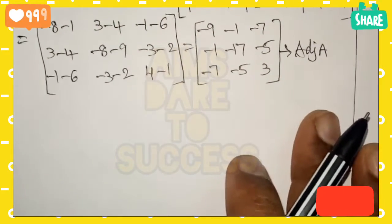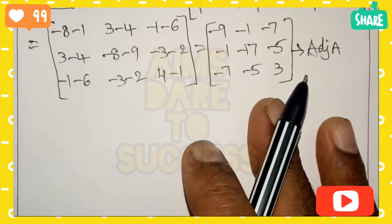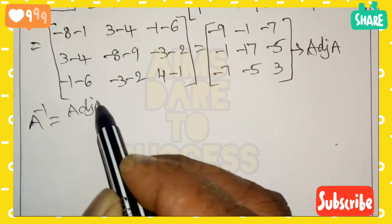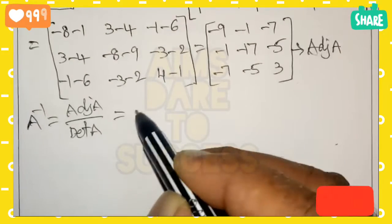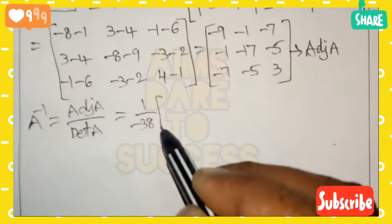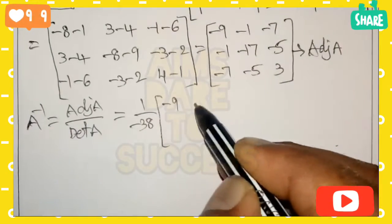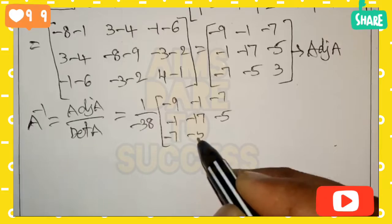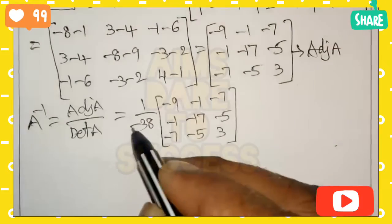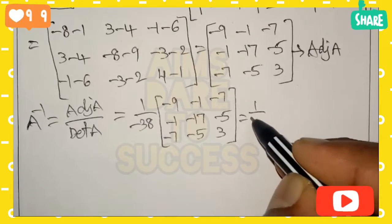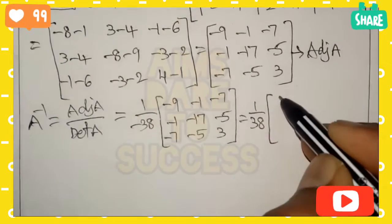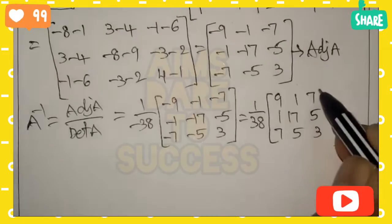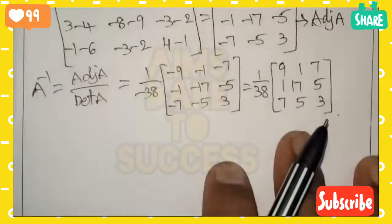After getting adjoint A, we can find A inverse. A inverse equals adjoint A divided by det(A). We already have det(A) = minus 38, so A inverse equals (1 / minus 38) times adjoint A. Since most values are negative, multiplying minus into minus gives plus: A inverse = (1/38) times [9, 1, 7; 1, 17, 5; 7, 5, minus 3].